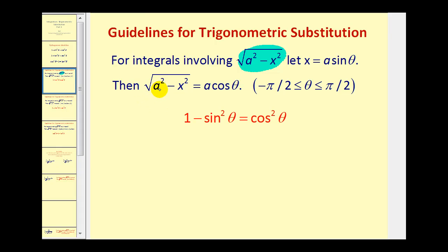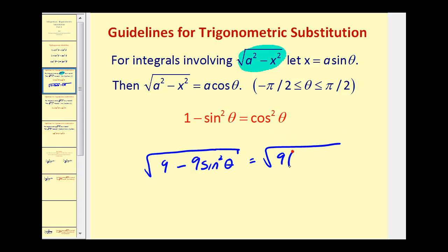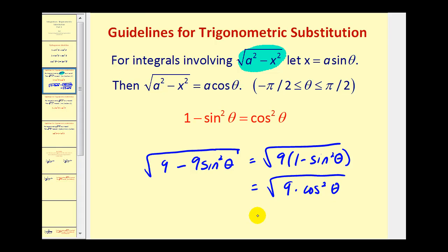For example, if a equals three, we'd have the square root of nine minus nine sine squared theta. We can factor out the nine to get the square root of nine times one minus sine squared theta. Since one minus sine squared theta equals cosine squared theta, the square root of nine is three and the square root of cosine squared is cosine theta — giving us three cosine theta. This confirms that when x equals a sine theta, the square root of a squared minus x squared equals a cosine theta.